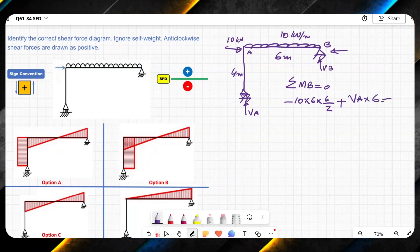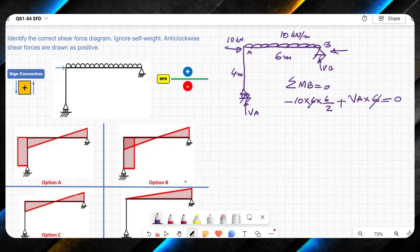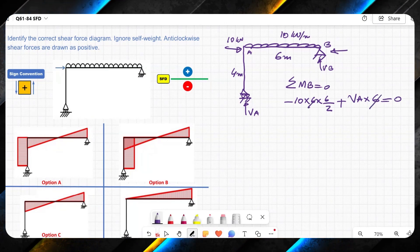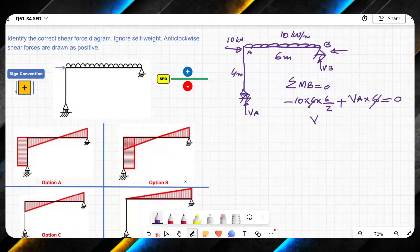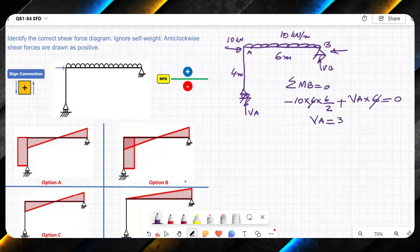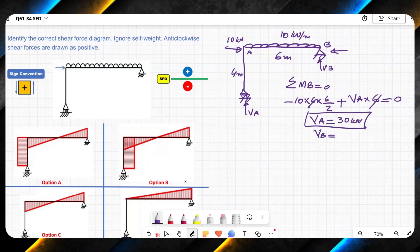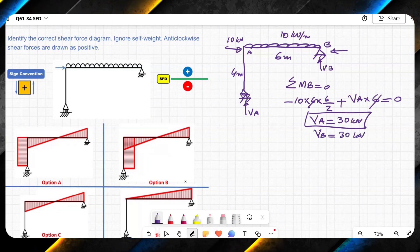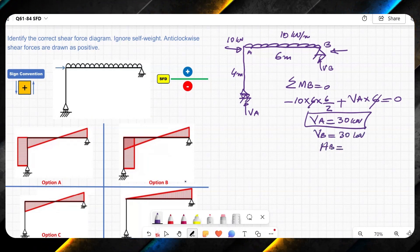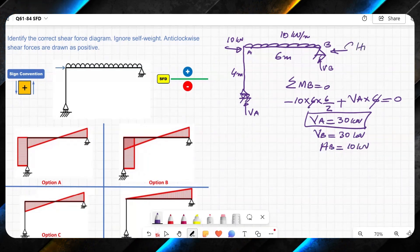Is equal to zero. So 6 and 6 will get cancelled. And VA will be equal to 10 times 6 over 2. So VA will be equal to 30 kN. If VA is 30, VB will be equal to 30 as well. And HB will be equal to 10 kN, which is horizontal reaction over here.